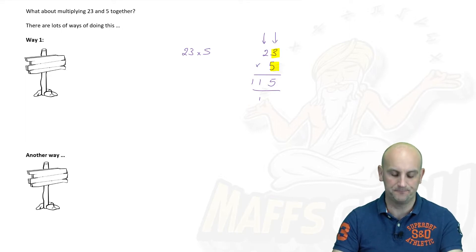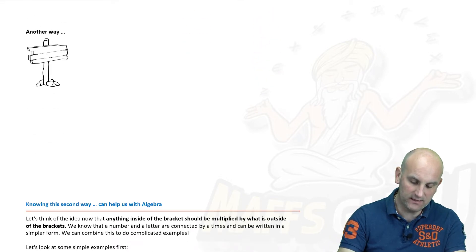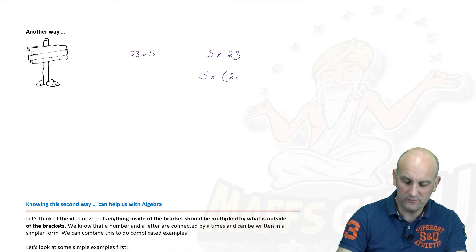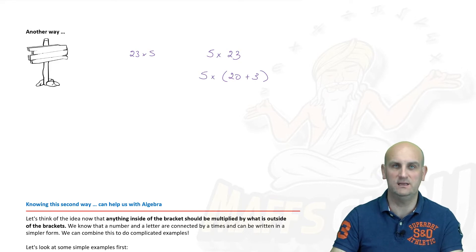That's certainly one way to do it but I really like this idea here. So I'm just going to write it out again. I've got 23 times 5. Now I know that that's the same as 5 times 23 which is the same as 5 times (20 plus 3). Do you notice what we're doing there? We're basically breaking up that 23 into two individual things. You know, a tens thing as in two lots of tens.